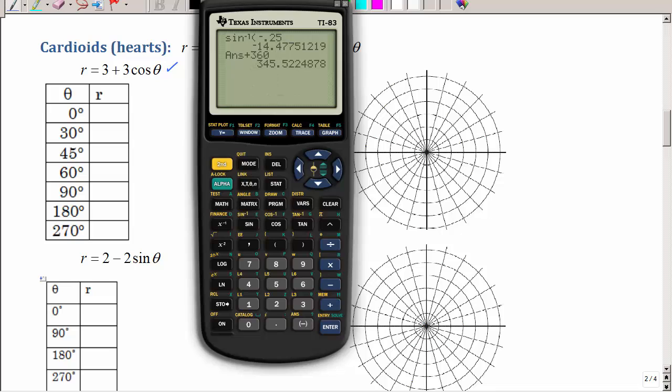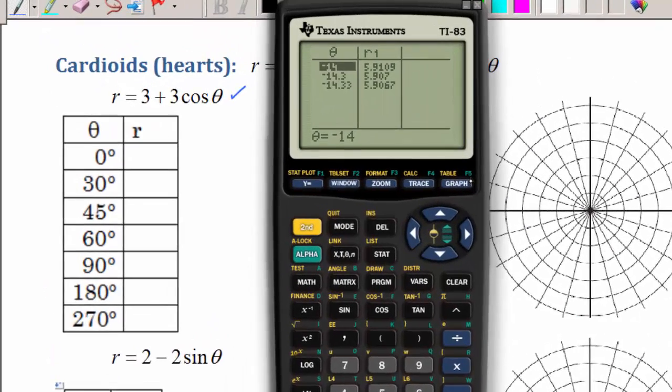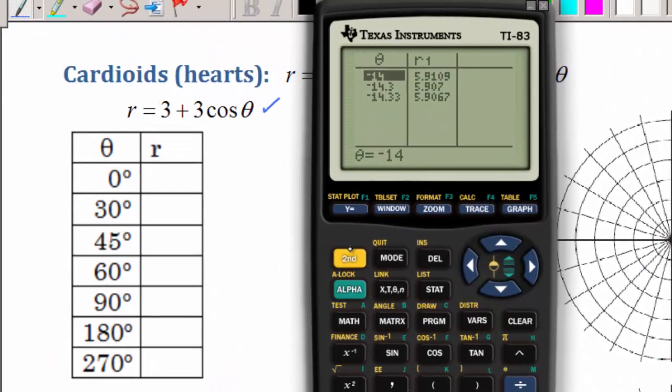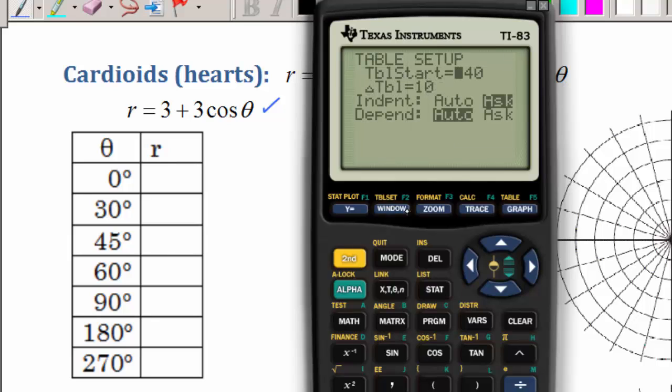So I'm going to clear that. I have 3 plus 3 cosine theta, and I want to go to my table. Well, notice it's not cranking it out. Let's do table set, which is right there, that second window. So I want it to start at 0, and it looks like I could count maybe every 15 degrees.